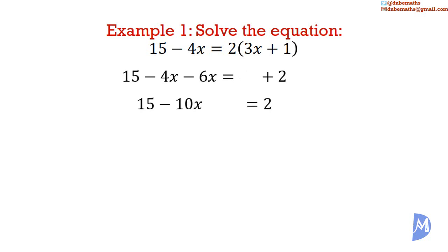So we get 15 minus 10x, or 15 added to negative 10x, is equal to 2. We remove the positive 15 from the left-hand side by adding negative 15 to both sides. The 15 and the 15 cancel to leave negative 10x on the left-hand side. And 2 added to negative 15 is equal to negative 13.